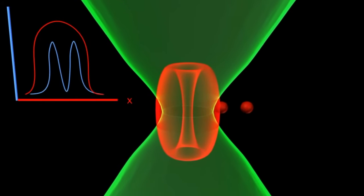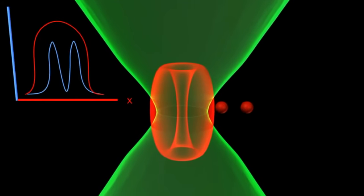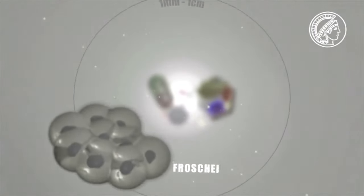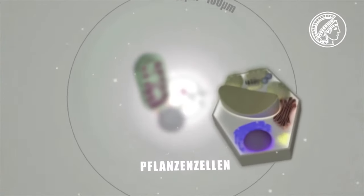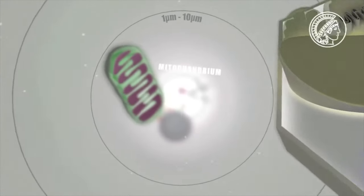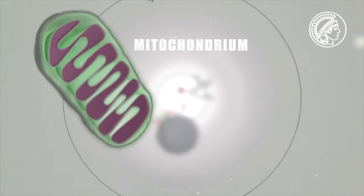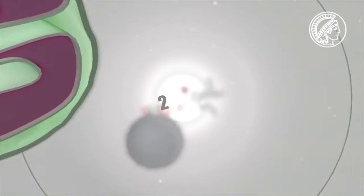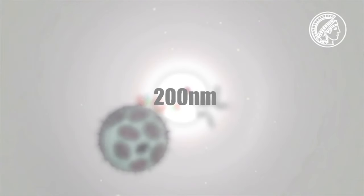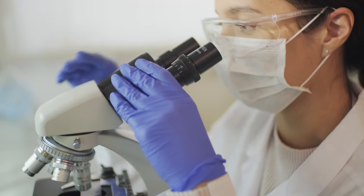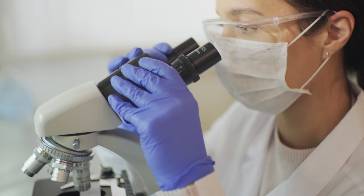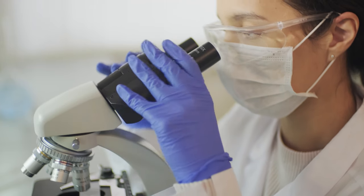It is now possible to distinguish objects to about 30 nanometers, which already allows you to see viruses. This is almost seven times less than with a conventional microscope — it's like looking at a soccer ball on the moon from Earth. That's a pretty cool way to trick physics.